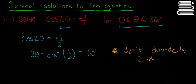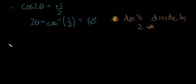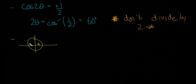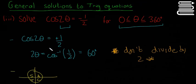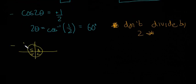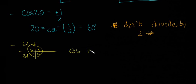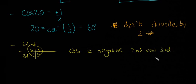The next step is to draw a little CAST circle — A, S, T, and C. In this question, cos of 2 theta is equal to minus a half, so it's negative. Cos is negative in the second and the third quadrants, because all of them are positive in the first quadrant, and cos is positive in the fourth. So cos is negative in the second and third. This 60 degrees is our reference angle.